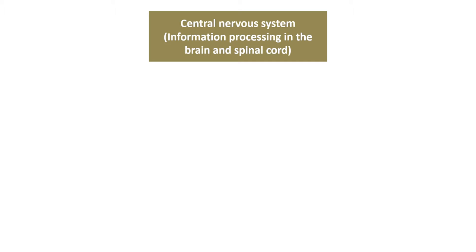The central nervous system is at the centre - this involves the brain and the spinal cord. It's important to remember the spinal cord because in some cases action potentials coming in via the afferent pathways don't actually make it to the brain. In some cases they will synapse directly with an efferent neuron going out from the spinal cord, with no involvement of the cortex or brain at all. This is a reflex. We will talk about reflexes in the second part.